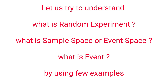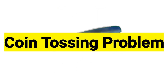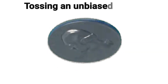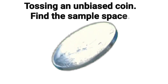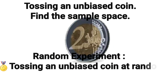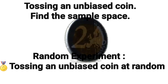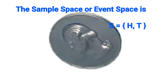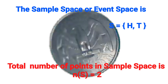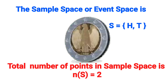First example: an unbiased coin is tossed once. Find the sample space. The random experiment here is tossing a coin. There are two possible outcomes: head and tail. Therefore the sample space S = {Head, Tail}. The total number of points in the sample space n(S) = 2.